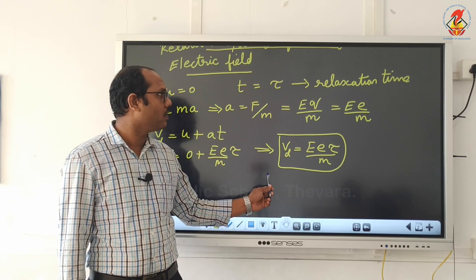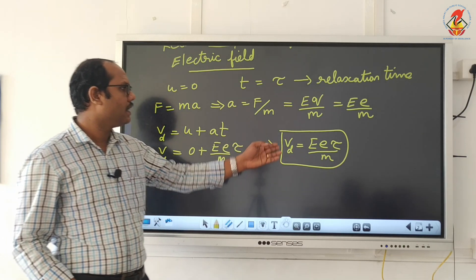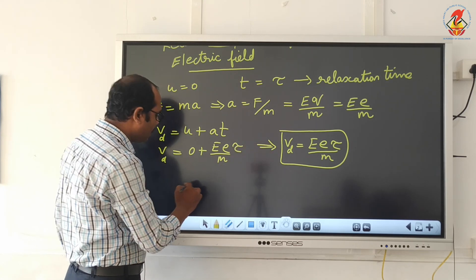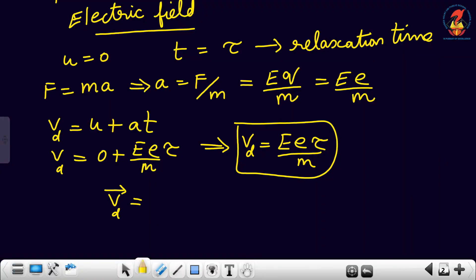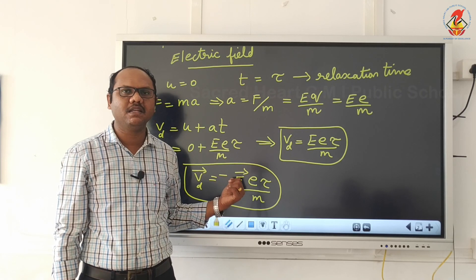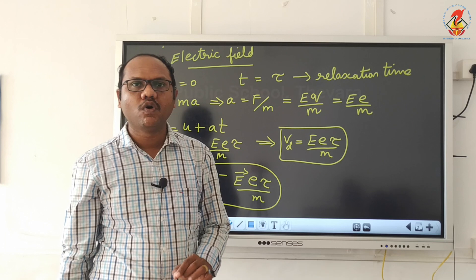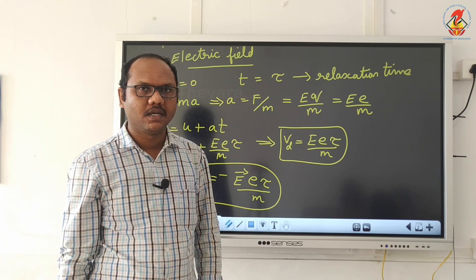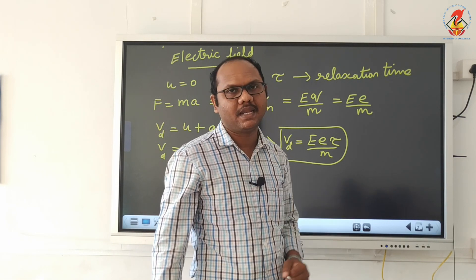Velocity is a vector quantity. In vector form, drift velocity is written as vector vd = −(eτ/m)·vector E. The negative sign is because electrons move opposite to the direction of the electric field.